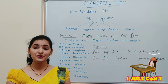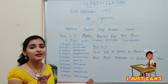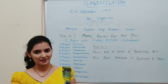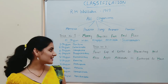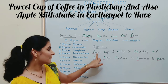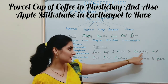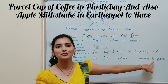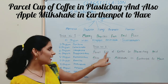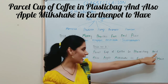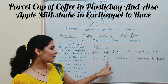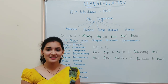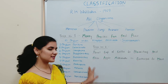You may find it difficult to remember all the phylum names, that too in a correct sequence, but don't worry. In this video I have a trick for that too. The trick is a simple sentence: 'This parcel cup of coffee in plastic bag and also apple milkshake in earthen pot to have.' The first letter of each word represents the phylum name.